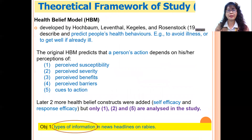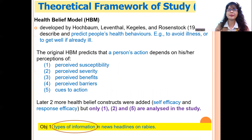The theoretical framework of this study has two parts. The first is the Health Belief Model developed by Hochbaum et al. (1952), which is for predicting factors that affect people's health behaviors and their intention to perform preventive health behaviors. There are five factors, which were already described in the operational definitions of terms.